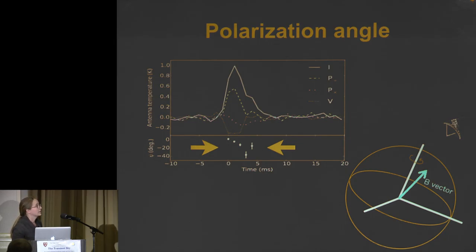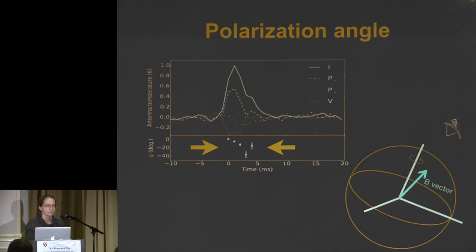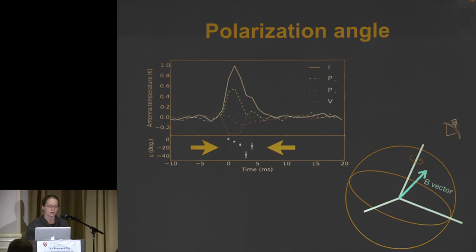Lastly, the polarization angle changes with time over the sweep of this burst — something we see in pulsars, usually interpreted by the rotating vector model: a changing magnetic field with time. In pulsars it's because you see different lines of sight through the rotating magnetic field vectors. Something is changing with time here — perhaps this source is rotating, or there's some other dynamical or intrinsic effect — yet to be determined.